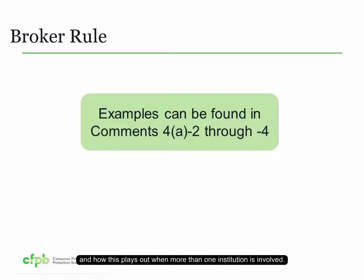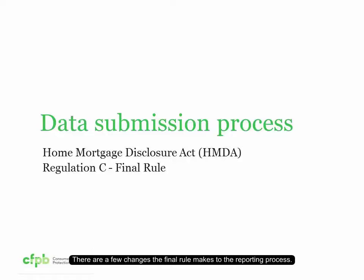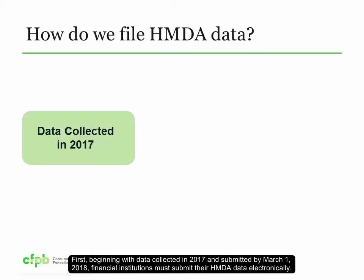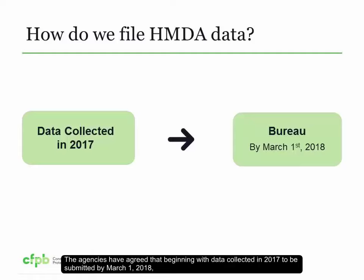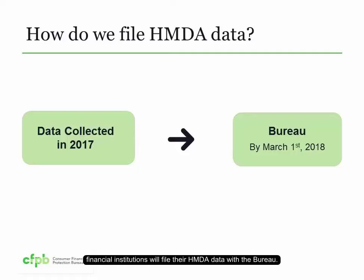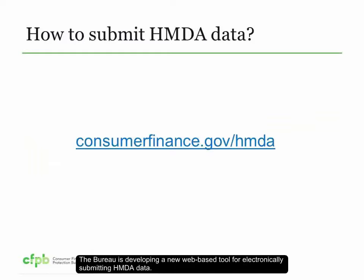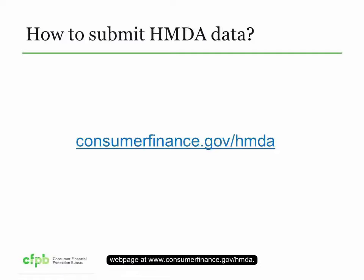There are a few changes the final rule makes to the reporting process. First, beginning with data collected in 2017 and submitted by March 1, 2018, financial institutions must submit their HMDA data electronically. The final rule retains the requirement that the financial institution must submit its data to the appropriate federal agency by March 1 following the calendar year for which it collected the data. The agencies have agreed that beginning with data collected in 2017 to be submitted by March 1, 2018, financial institutions will file their HMDA data with the Bureau. The Bureau is developing a new web-based tool for electronically submitting HMDA data. Additional information regarding this tool will be provided later on the Bureau's HMDA webpage at www.consumerfinance.gov/HMDA.